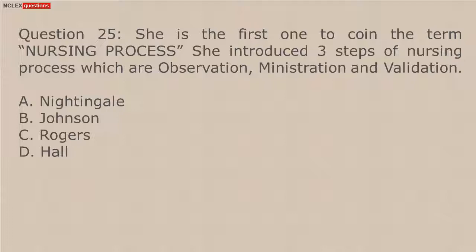Question 15. The nursing care plan is: A. A written guideline for implementation and evaluation. B. A documentation of the client care. C. A projection of potential alterations in client behaviors. D. A tool to set goals and project outcomes. Answer: D. This is measurable and objective.